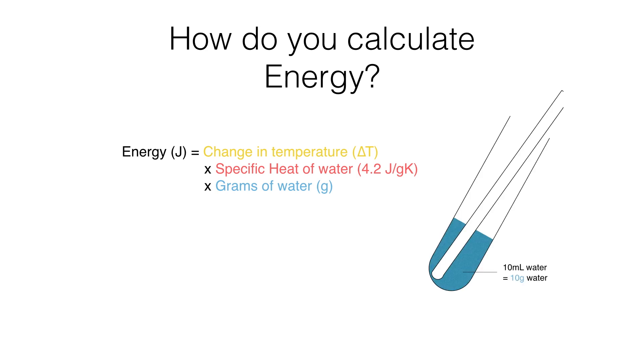If we examine our test tube with thermometer inside, we had exactly 10 mils of water. Luckily, one mil of water equals one gram of water. So if there's 10 mils, there's 10 grams of water.